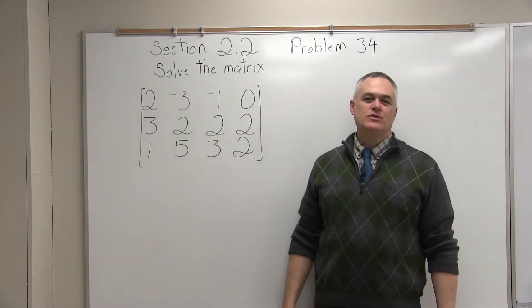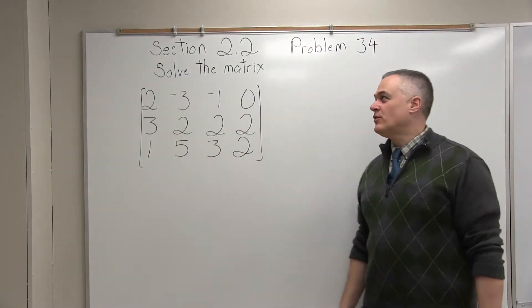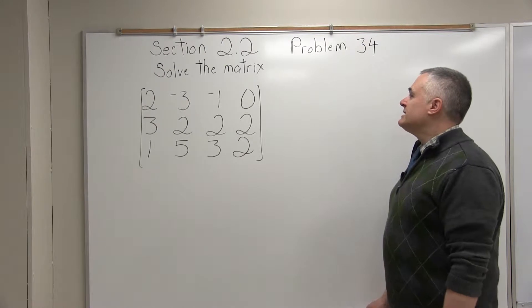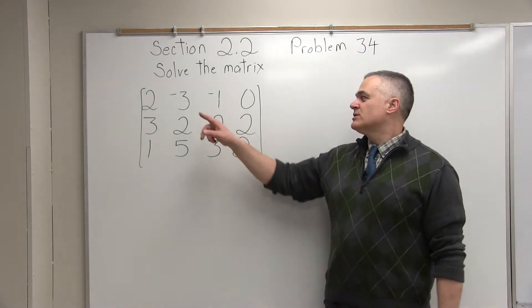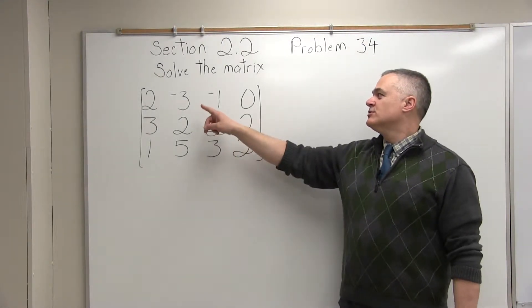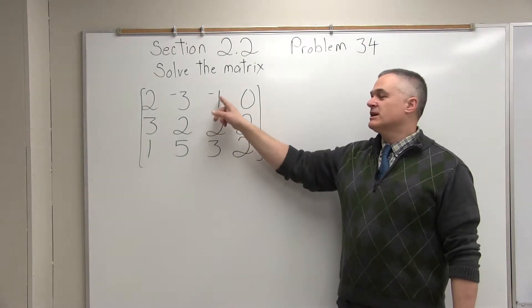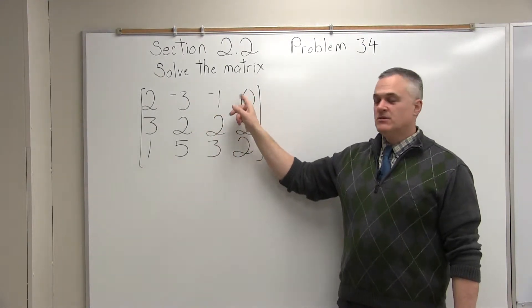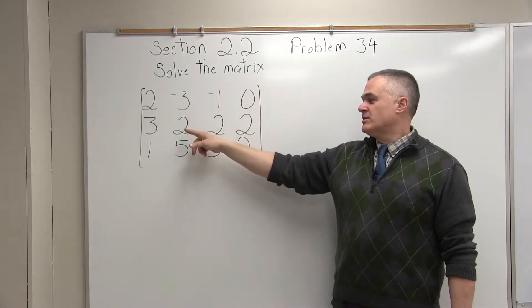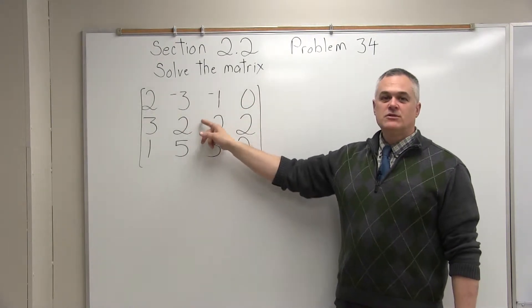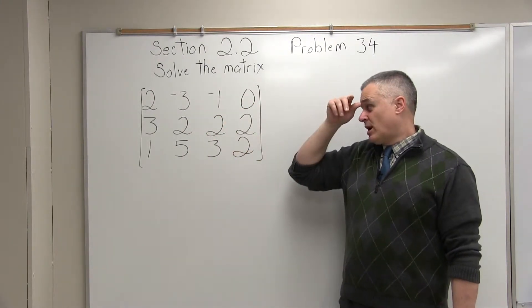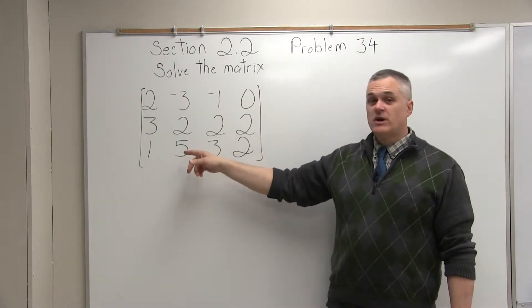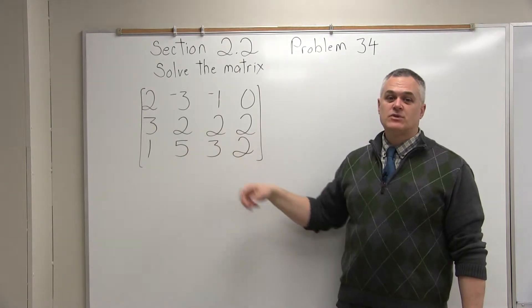This is Section 2.2, Problem 34. It says, solve the matrix, and we have a matrix. The top row is 2, negative 3, negative 1, 0. The middle row is 3, 2, 2, 2. And the bottom row is 1, 5, 3, 2.